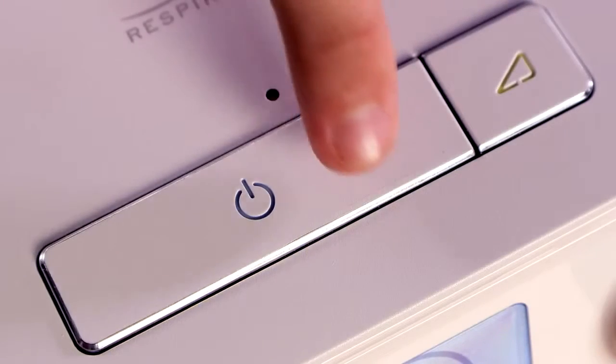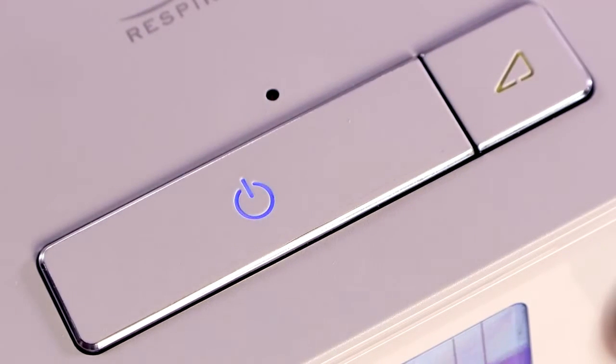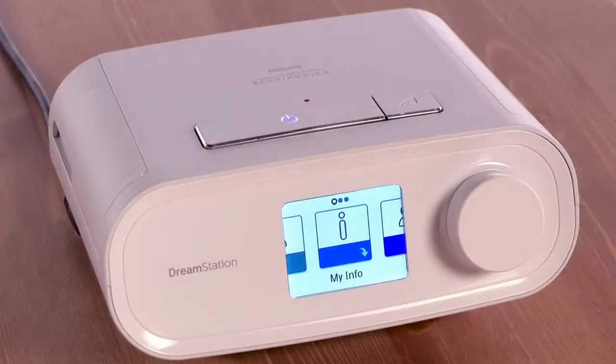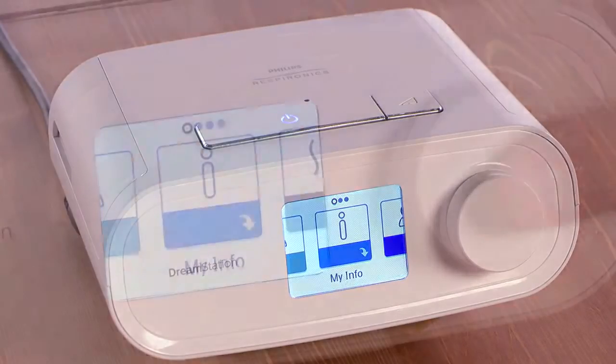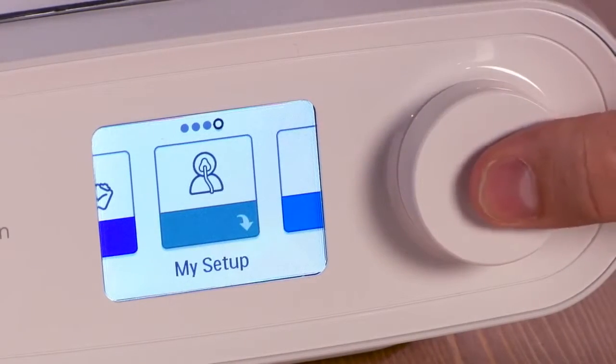In the morning, when you are finished with your therapy, press the on-off button. With therapy turned off, you can make adjustments to your ramp starting pressure in My Setup.